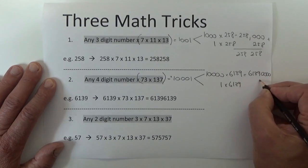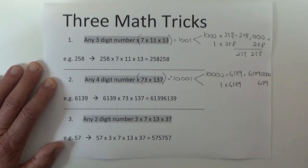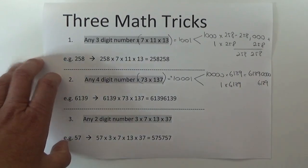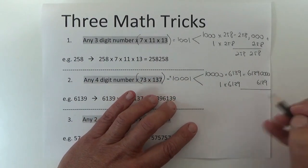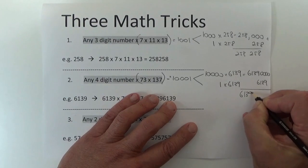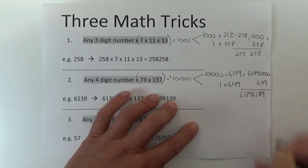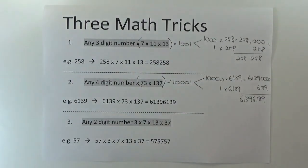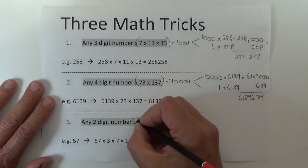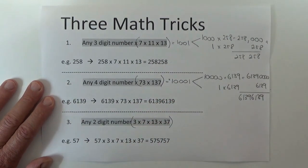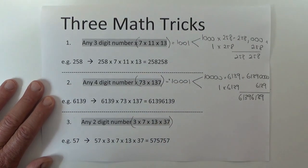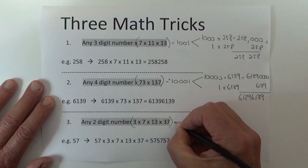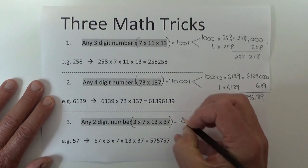And then 1 times 6139 is just 6139. Add those up, and the answer is 61396139. For the two-digit number, it's slightly more complex: 3 times 7 times 13 times 37 equals 10101.